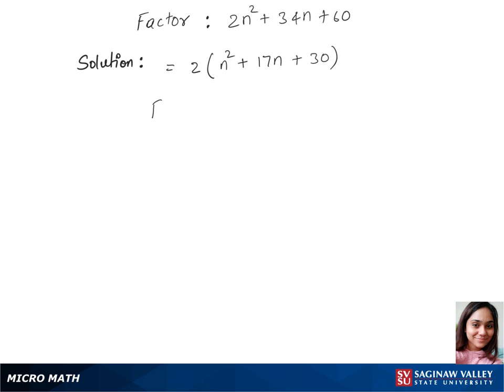Now we'll find the factors of 30. We have 15 times 2 and also we have 1 times 30.